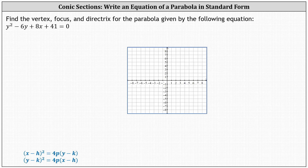Because our equation contains y squared and not x squared, we'll write the equation in the second form: the square of y minus k equals 4p times the quantity x minus h. Recall because the y part is squared, the parabola opens left or right based upon the sign of p. If p is positive, the parabola opens right. If p is negative, the parabola opens left. And h comma k is the vertex.